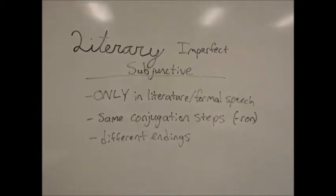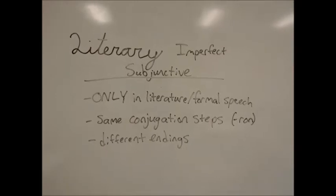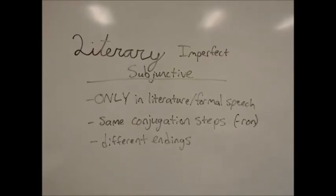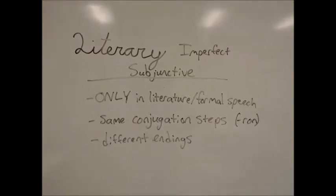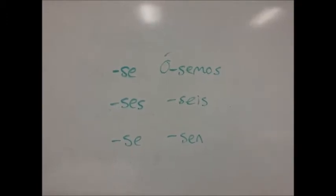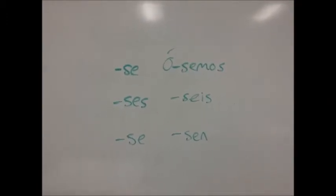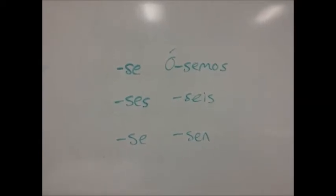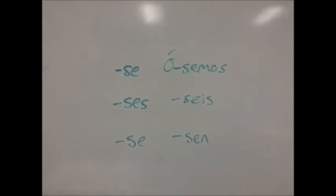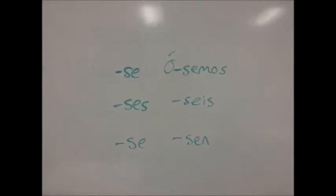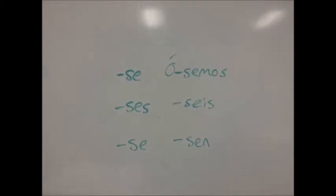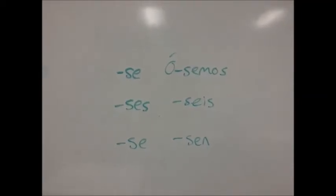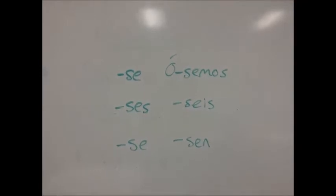Also, there are different endings in the Literary Imperfect Subjunctive, which I'll show you now. These endings apply to ER, IR, and AR verbs. They are: SE, SES, SE, SEMOS, SEIS, and SEN. You should notice that there is going to be an accent over whatever syllable comes before the NOSOTROS form.